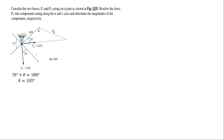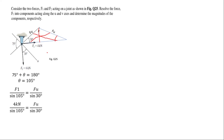We get θ equal to 105 degrees. Now we can apply the sine rule. F1 over sin 105° equals Fu over sin 30°. Making Fu the subject: Fu equals F1 × sin 30° divided by sin 105°. Since F1 equals 4 kN, we get Fu equal to 2.07 kilonewtons.